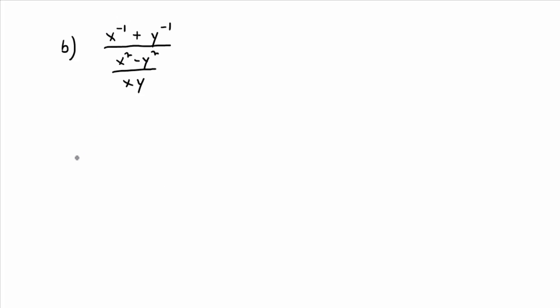Anybody remember what x to the negative 1 means? So when you see x to the negative 1, that negative means you take the reciprocal. So if it's x over 1 to the negative 1 power, it becomes 1 over x to the positive 1 power. So long story short, x to the negative 1 is really 1 over x.